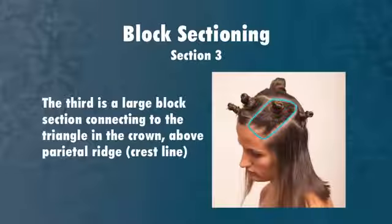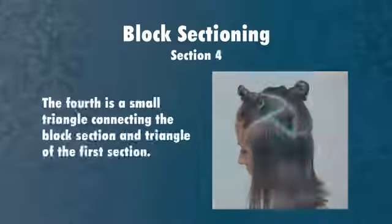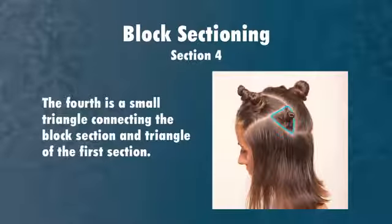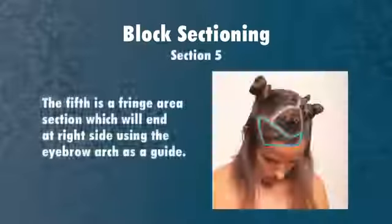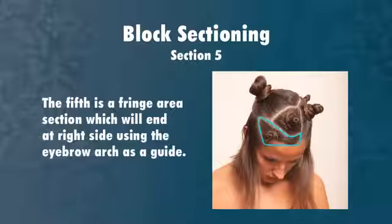The third is a large block section connecting to the triangle on the crown above the parietal ridge or crest line. The fourth is a small triangle connecting the block section and the triangle of the first section. The fifth is a fringe area section which will end at the right side using the eyebrow arch as a guide.